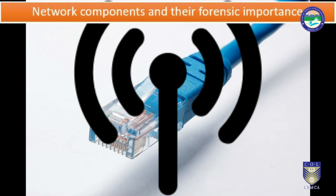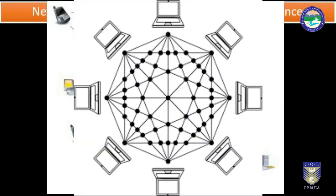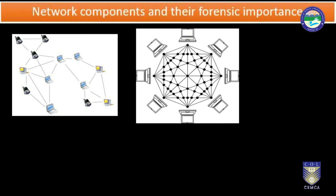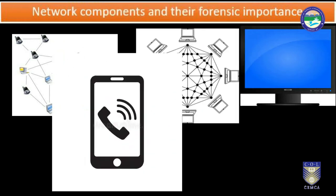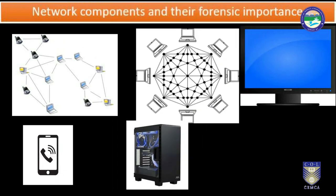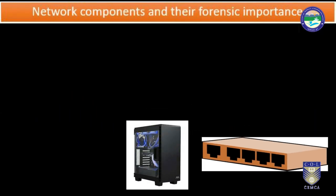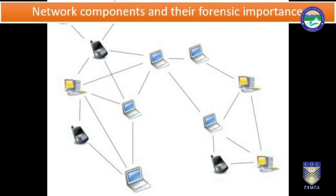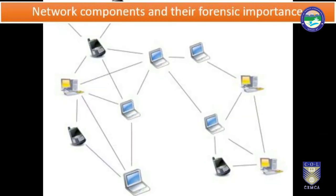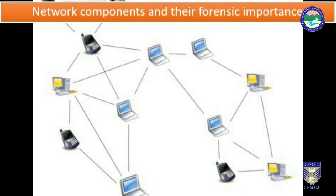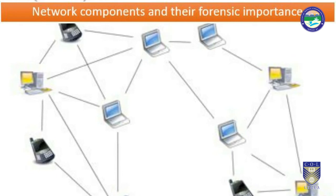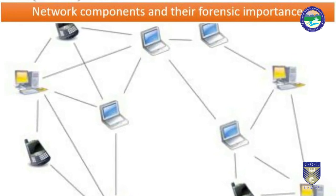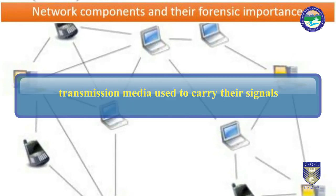Network computer devices that originate, route and terminate the data are called network nodes. Network nodes can include hosts such as personal computers, PCs, phones, servers as well as networking hardware. Two such devices can be said to be networked together when one device is able to exchange information with the other device, whether or not they have a direct connection to each other.